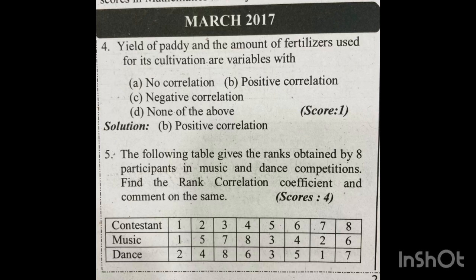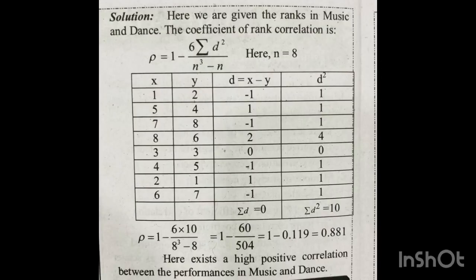Let's set up the solution. We are given the ranks in music and dance. The coefficient of rank correlation — that is rho — is equal to the Spearman rank correlation coefficient. The formula is: rho equals 1 minus 6 times sigma d-squared, divided by n-cubed minus n. This is our equation.